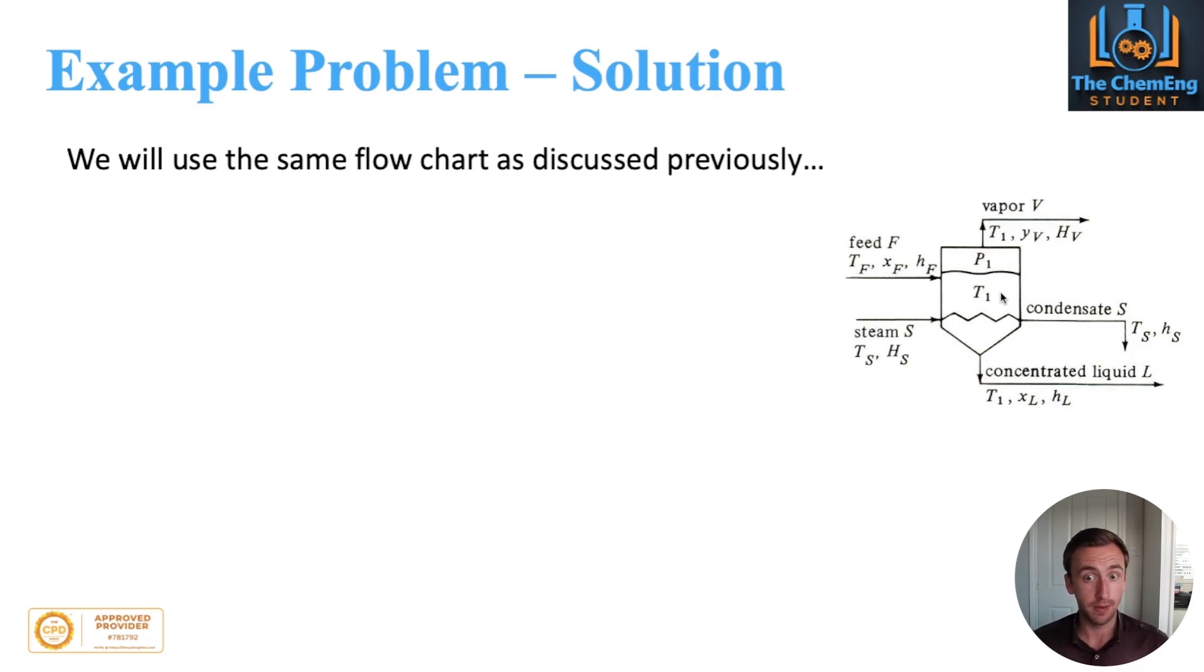We're going to use the same chart as we have throughout, and we'll use this as our baseline for the model. The first thing we'll do is the overall balance first. What comes in must come out. We know the feed is 9072, so we'll pop that in. Now we have two unknowns and only one equation, so we have a problem. We need another piece of information to eliminate a degree of freedom.